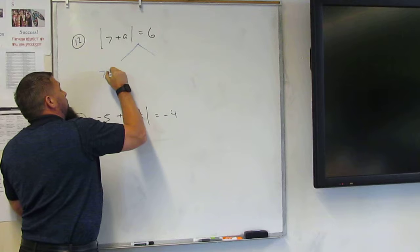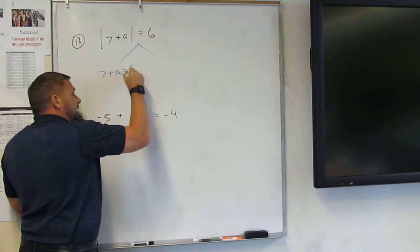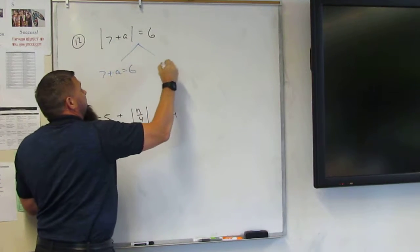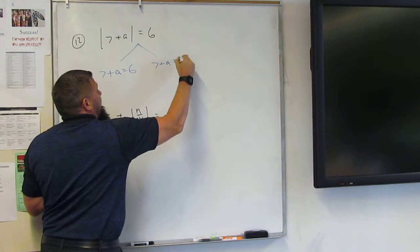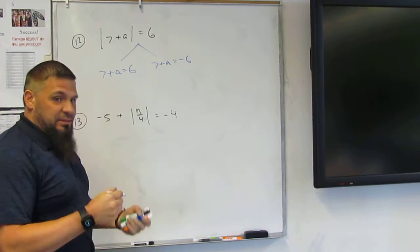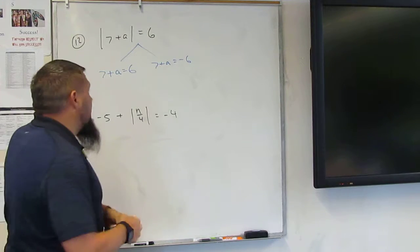So this is 7 plus A equals 6, or this could be negative 6, so 7 plus A could equal negative 6. Two different directions, okay? And then we just do the math.